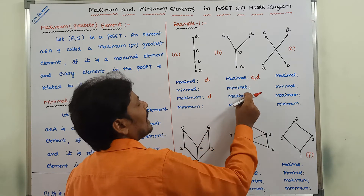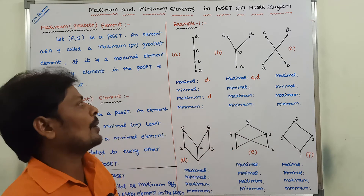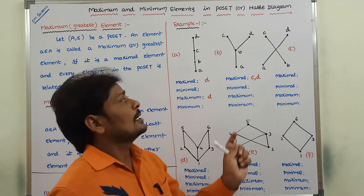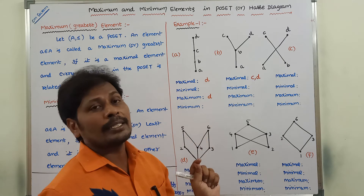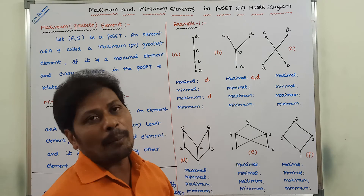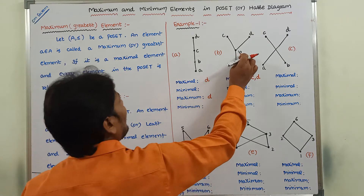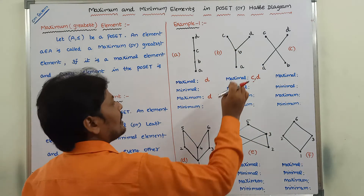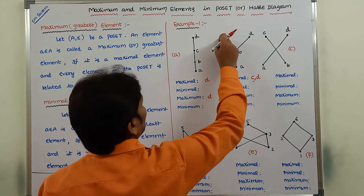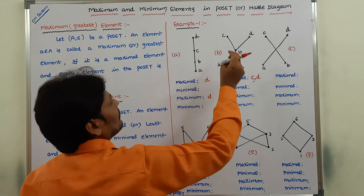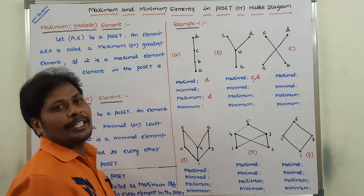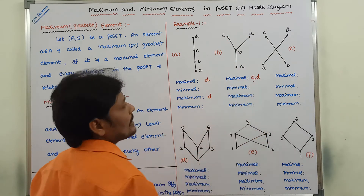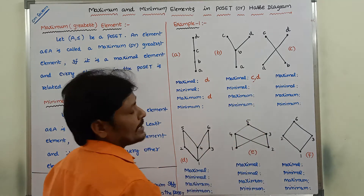Among C and D, what is the maximum element? We have to check whether every element in the poset is related to each. First, considering element C: B is related with C — yes. A is related with C via the transitive property — A relates with B, B relates with C, so A is also related with C. But D is not related with C when we are considering only C. Hence, we can say that C is not a maximum element.